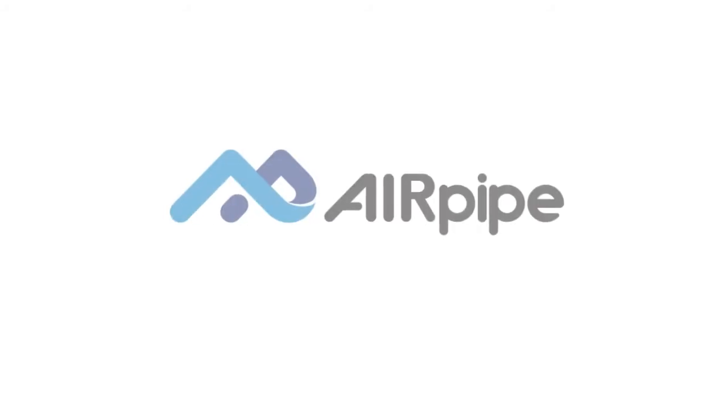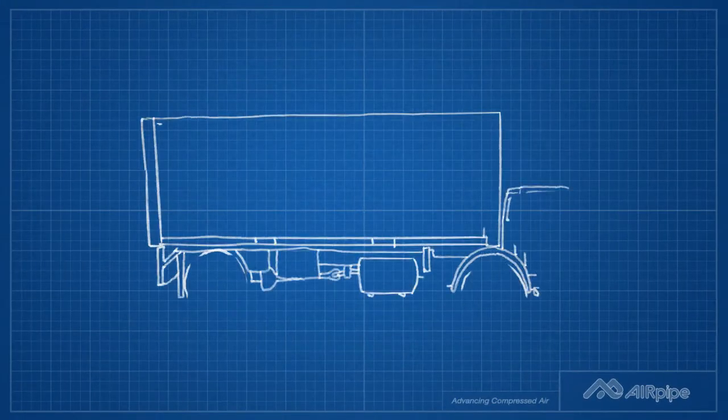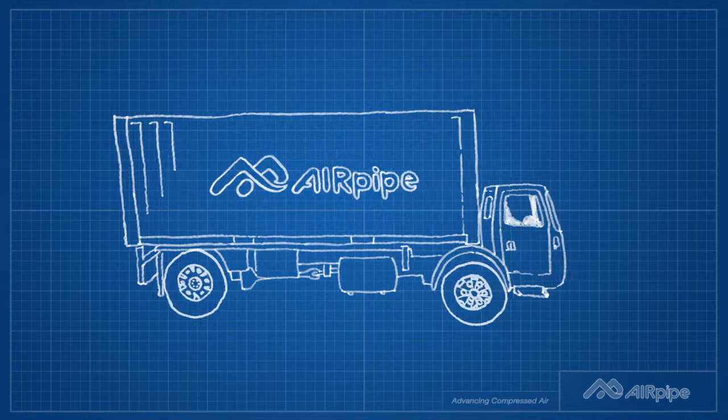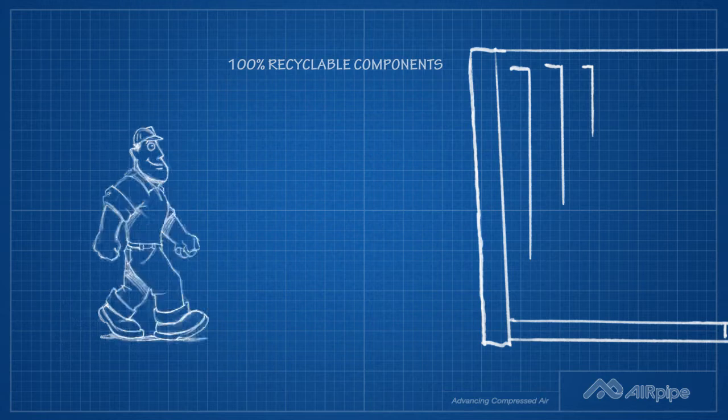AirPipe is advancing the compressed air and gas distribution industry with its superior performance piping system. The all-aluminum system is manufactured from high-grade materials and is environmentally friendly, using only 100% recyclable components.